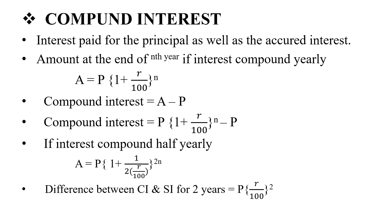Next, we are going to look at compound interest. Compound interest is the interest paid on the principal as well as the acquired interest. The amount formula is A is equal to P into 1 plus R by 100 the whole raised to n, where n is the number of years.